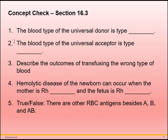Third question: what is the outcome of transfusing the wrong blood type? The antibodies from the recipient react with the antigens on the donor blood, causing agglutination, which brings in complement. Complement then hemolyzes the blood cells — that is the Type 2 reaction, where complement lyses the cells after antigen-antibody complexes form on the cell surface (opsonization). Fourth question: hemolytic disease of the newborn can occur when the mother is Rh negative and the fetus is Rh positive.